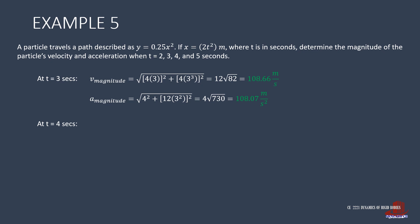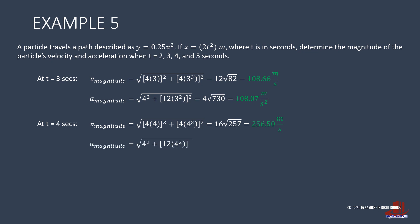With t equal to 4 seconds, the velocity comes as the root of (4×4)² plus (4×4³)², solved as 16 root of 257, or 256.5 meters per second. The acceleration is the root of 4² plus (12×4²)², equal to 192.04 meters per second squared.